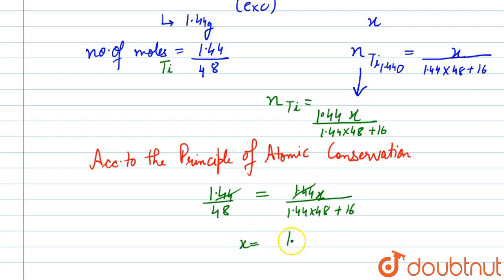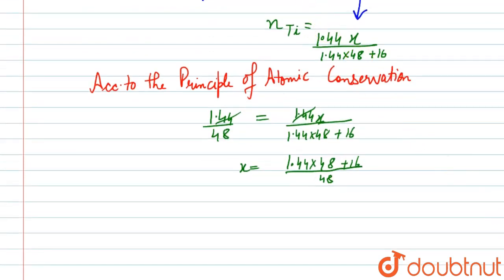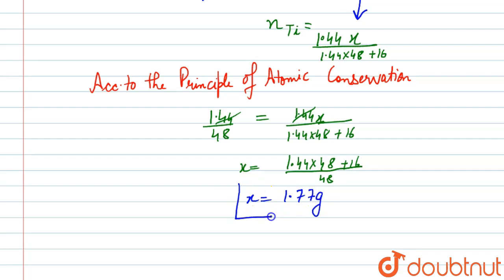We can now cancel terms and solve for x. This gives us x = 1.44 × (48 + 16) divided by 48. After solving, we get the value of x as 1.77 grams. This is the weight of titanium oxide, which is our answer.